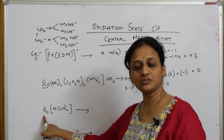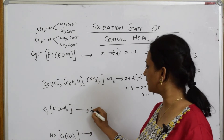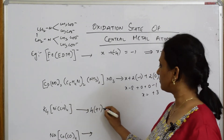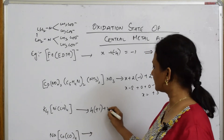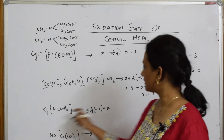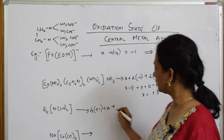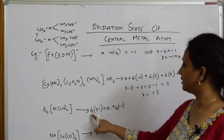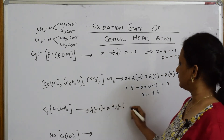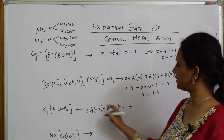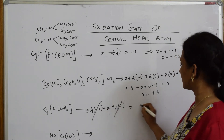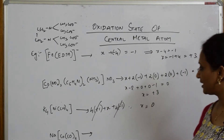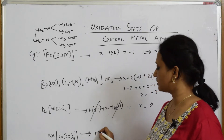Potassium is outside as a counter ion — there are 4 of them with charge +1 each, giving +4. Setting up the equation with nickel as X, the potassium contributions cancel and X = 0, but solving the inner complex gives X = +1.